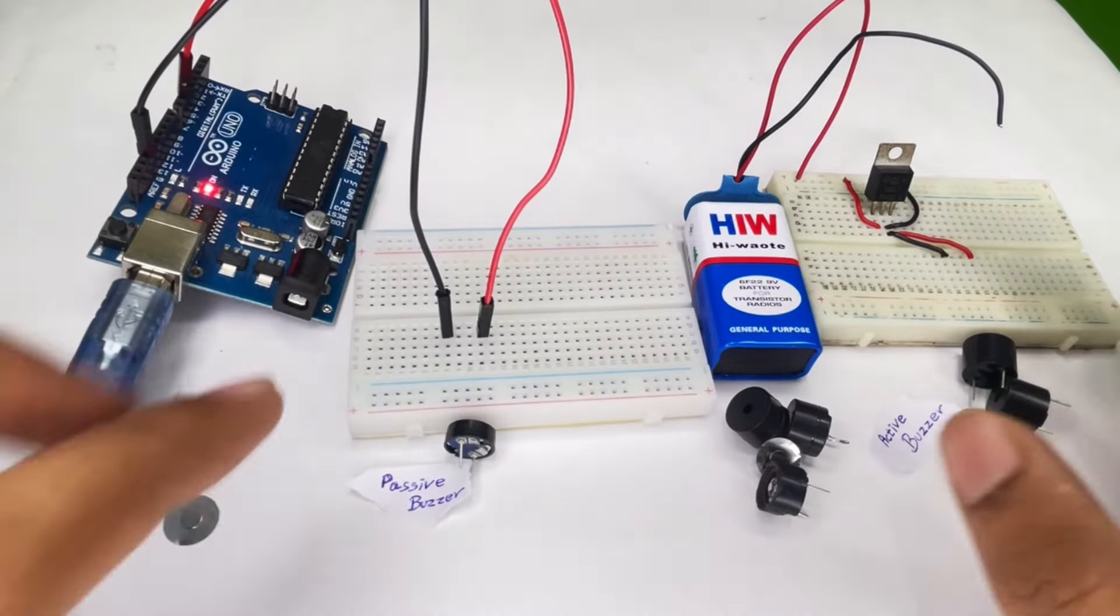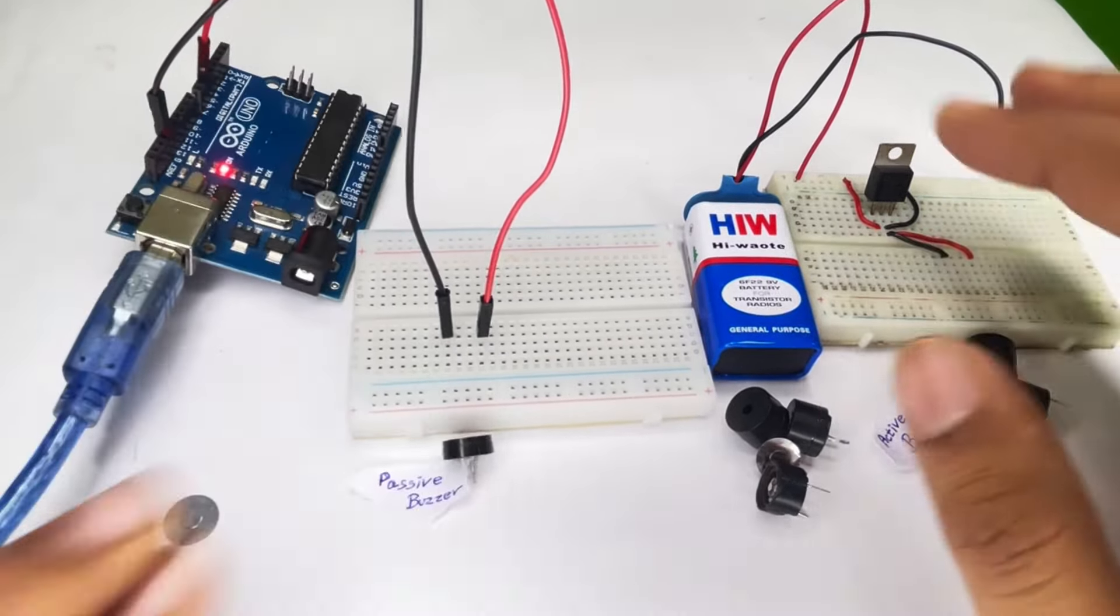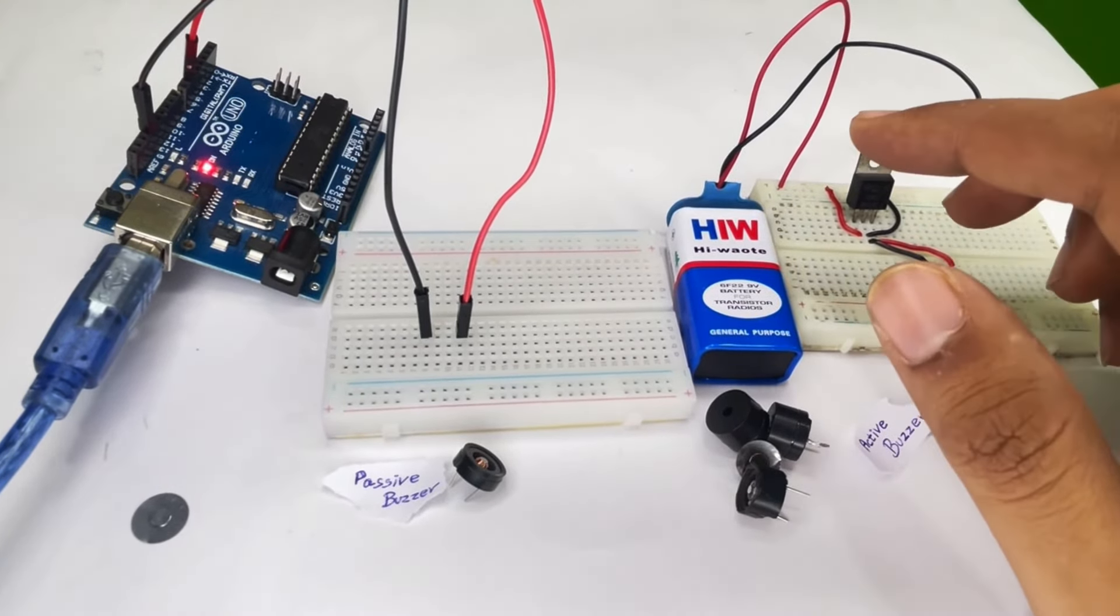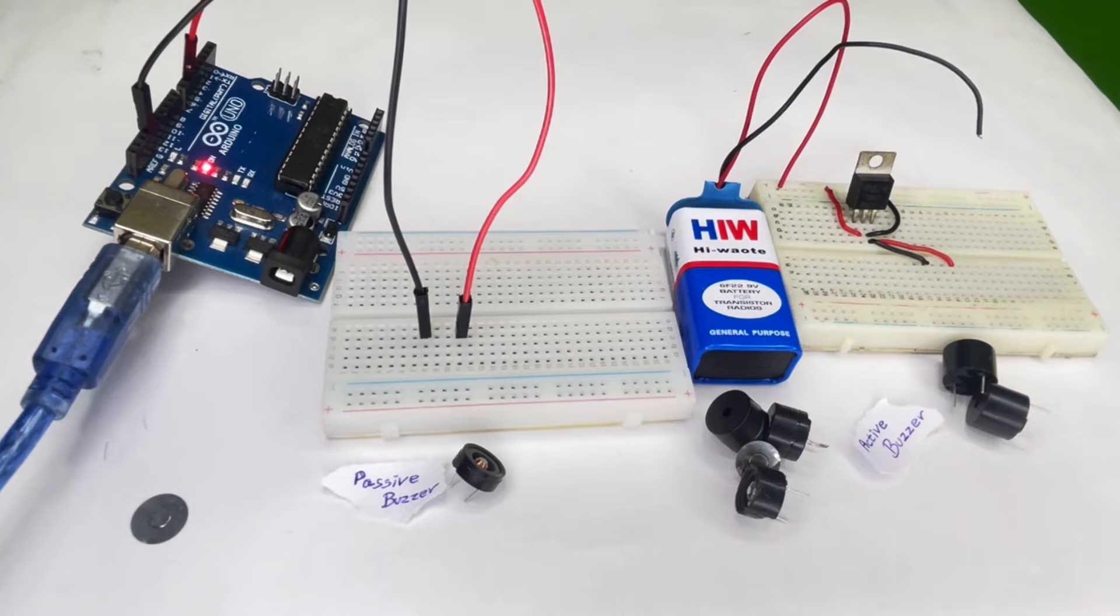So that's it guys, this is how you differentiate between an active buzzer and a passive buzzer. This is how you use them in a circuitry. For more details you can check out the link in the description. Thanks for watching. If you learned something, do consider subscribing to this channel. Thank you, bye bye.